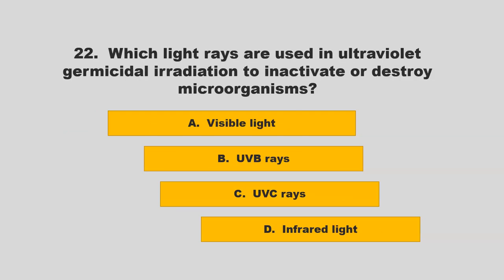Which light rays are used in ultraviolet germicidal irradiation to inactivate or destroy microorganisms? Is it visible light, UVB rays, UVC rays, or infrared light? If you chose C, UVC rays, you are correct.